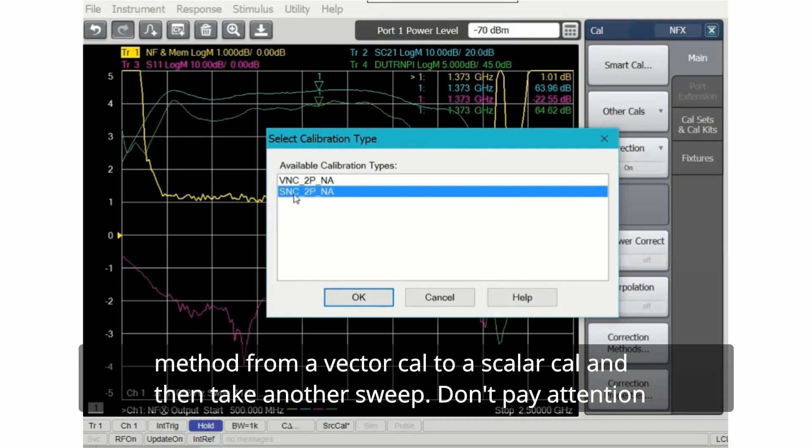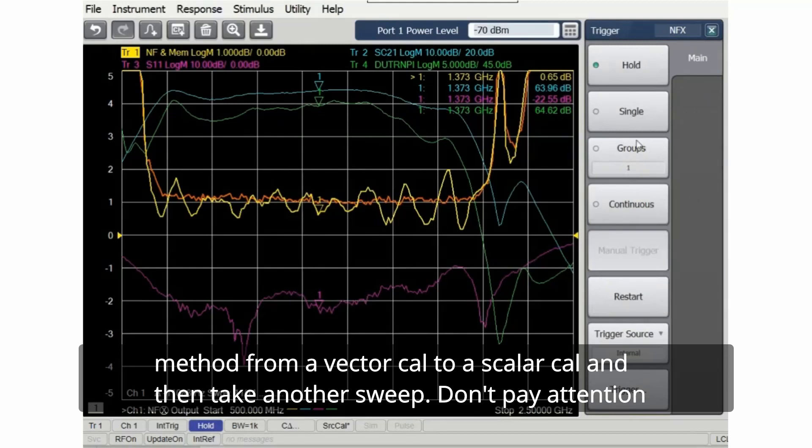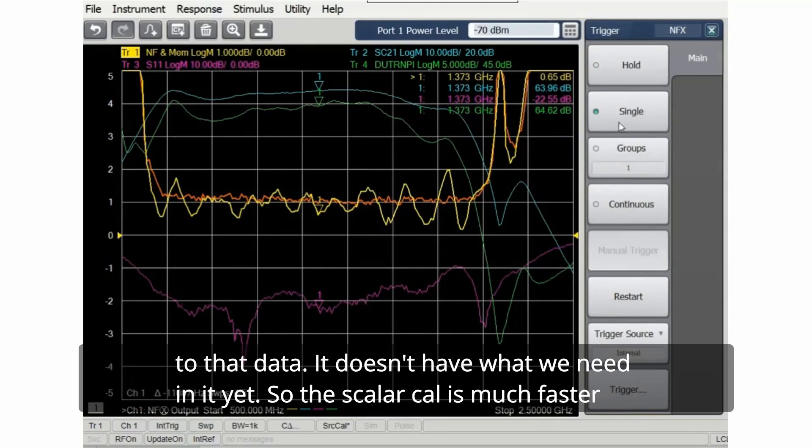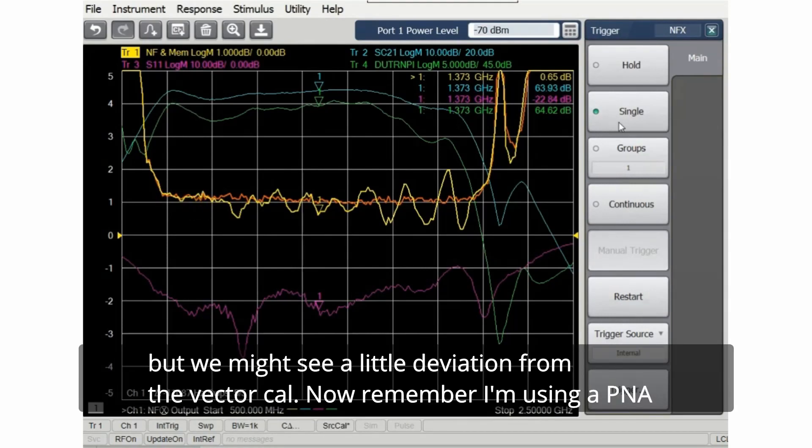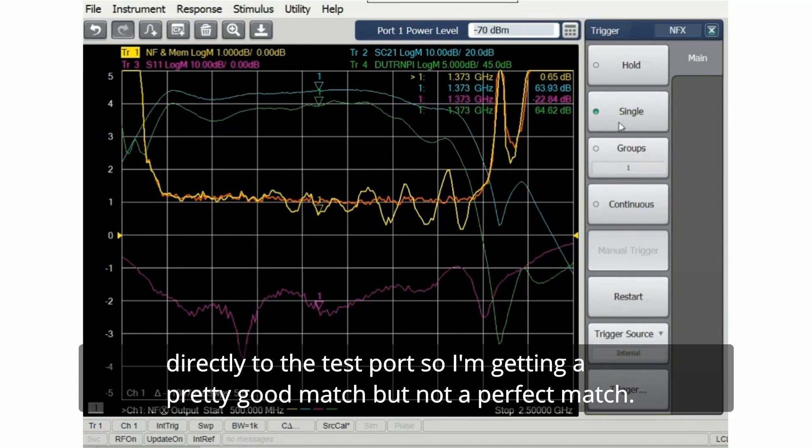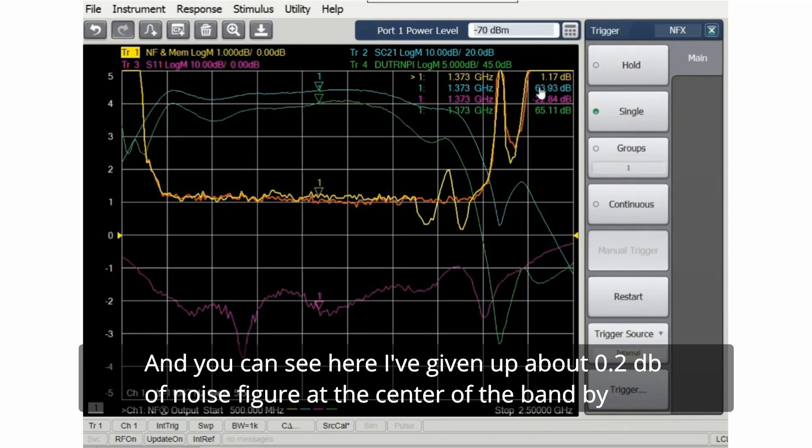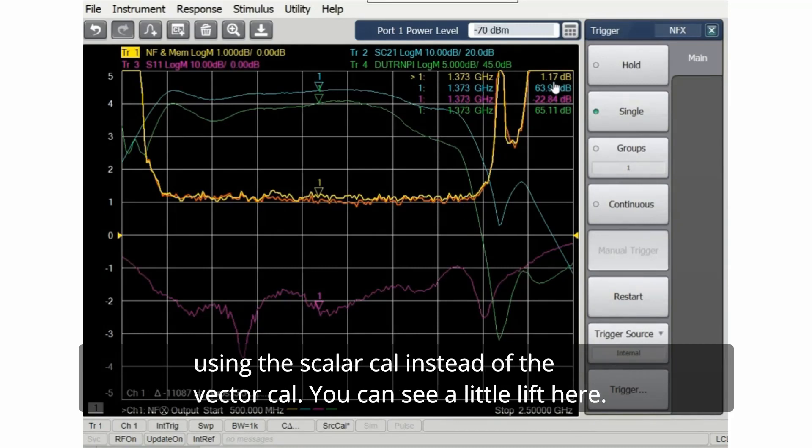So we can change the correction method from a vector cal to a scalar cal and then take another sweep. Don't pay attention to that data, it doesn't have what we need in it yet. So the scalar cal is much faster but we might see a little deviation from the vector cal. Now remember I'm using a PNA directly to the test port so I'm getting a pretty good match but not a perfect match. And you can see here I've given up about 0.2 dB of noise figure at the center of the band by using the scalar cal instead of the vector cal.